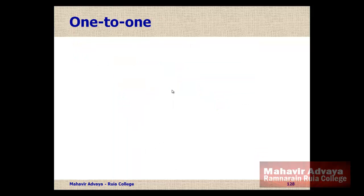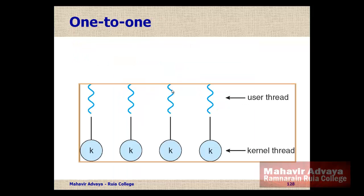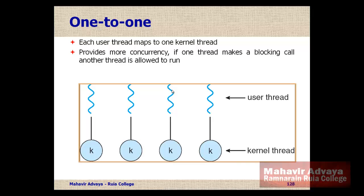In the one-to-one model, as the name suggests, for every user thread there is a kernel thread. Whatever user threads are created, for each user thread the kernel will also create a kernel thread, so each user thread is mapped to one kernel thread. It provides more concurrency.